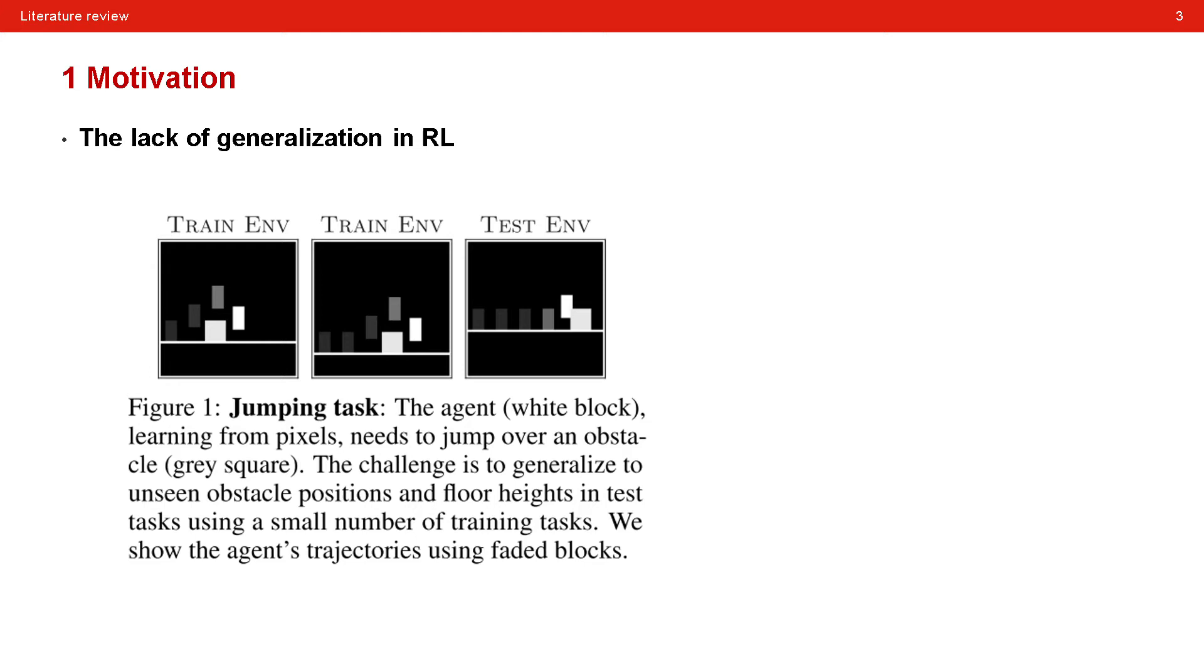Nowadays, as reinforcement learning technologies become more and more efficient and promising in many domains, the generalization has become one of the challenges that hinders its further development. Here is a very simple example. An agent learns to jump over an obstacle here. Even if it can behave well in the training process, once the obstacle is located in a previously unseen location, it will be very likely to struggle.